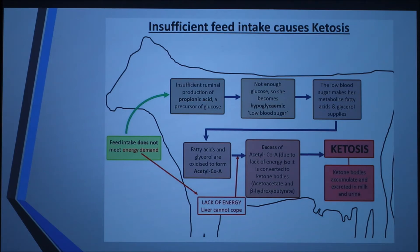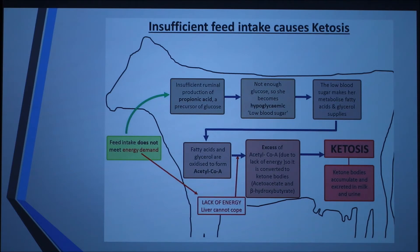This is a diagram that shows how ketosis works. If feed intake does not meet the energy demand, insufficient ruminal production of propionic acid will occur, causing the cow to have low blood sugar. That low blood sugar makes her metabolize fatty acids and glycerol supplies. The fatty acids and glycerols are oxidized to form acetyl-CoA, and the excess acetyl-CoA, because of the lack of energy, is converted into ketone bodies, which are accumulated and excreted in milk and urine.